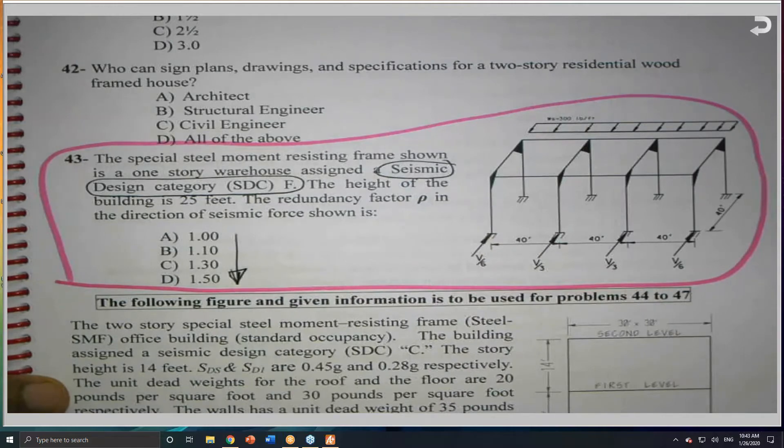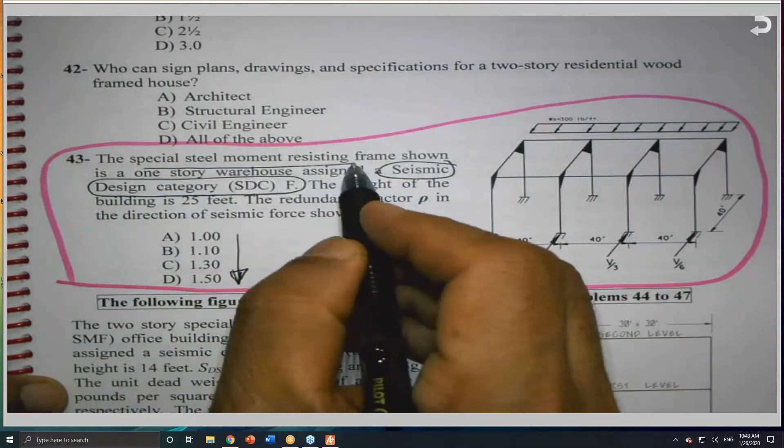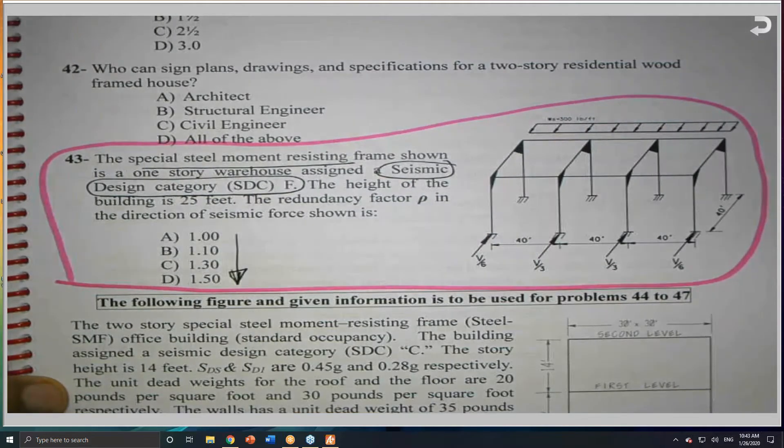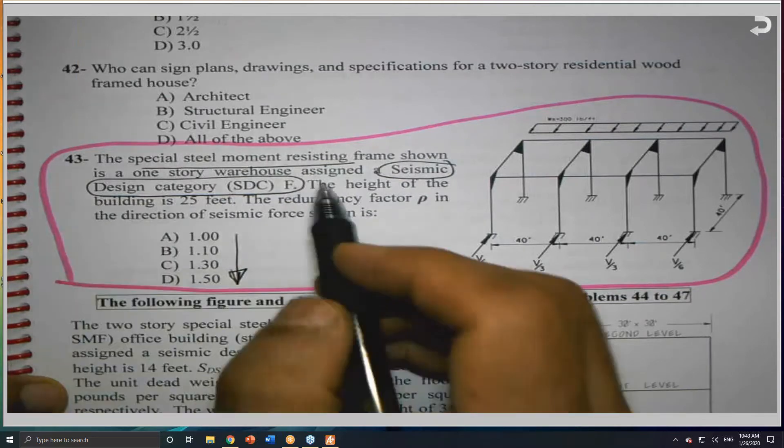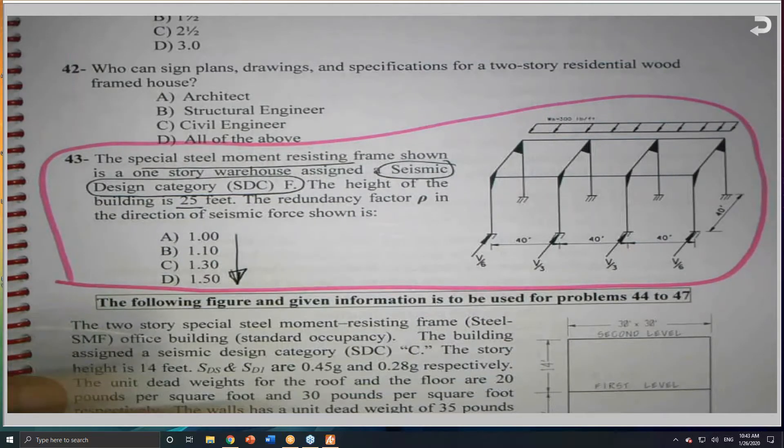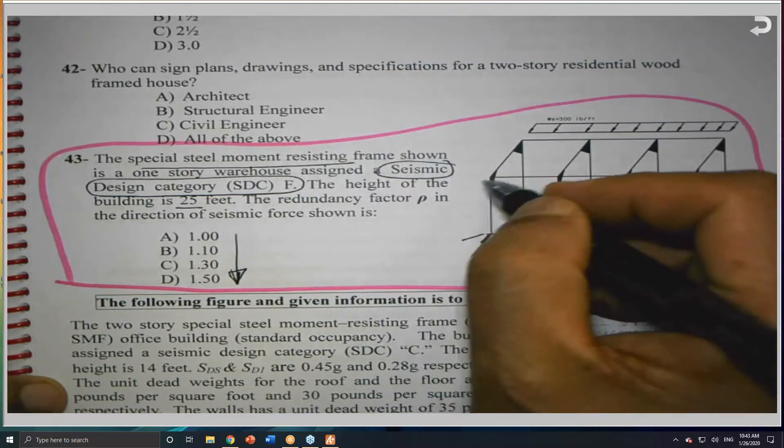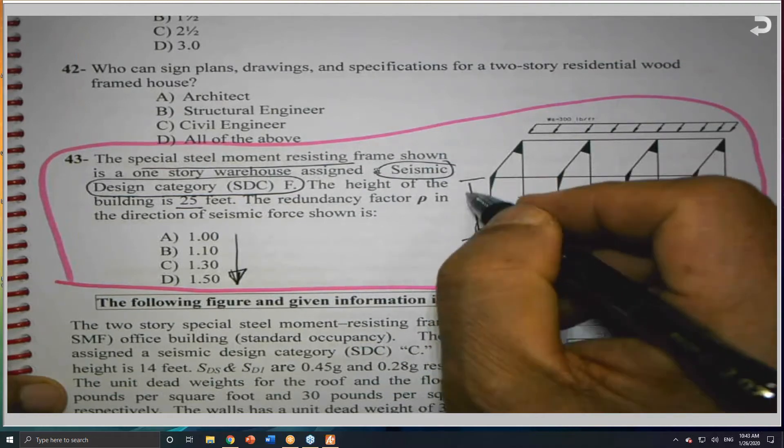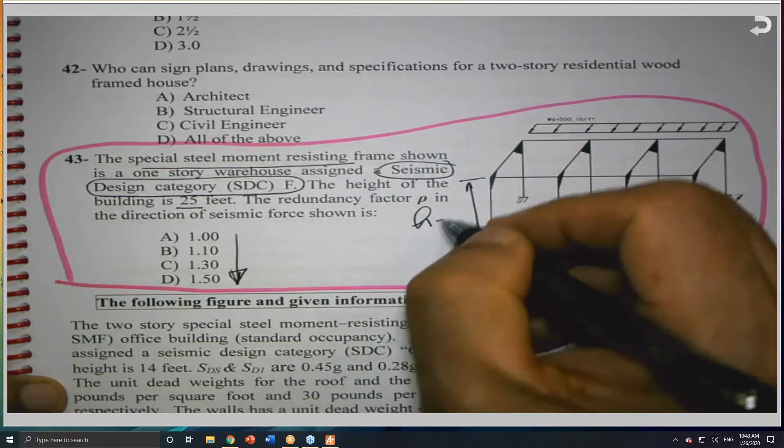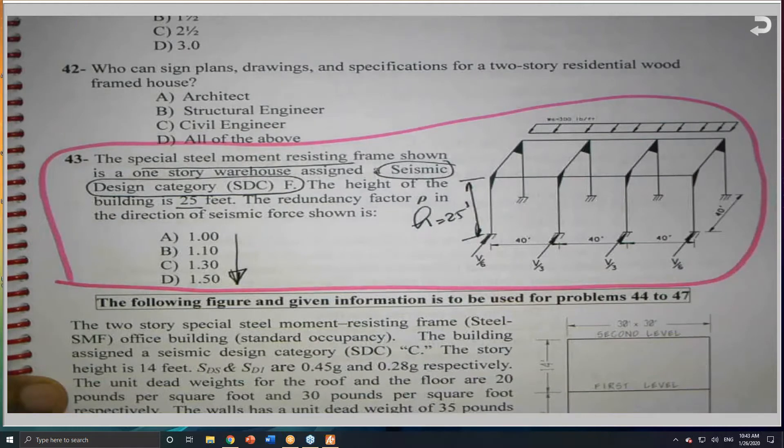Number two, he mentioned this is moment-resisting frame, or special steel moment-resisting frame. That means that I am able to count the number of bays. The height is given to be 25 feet. The height has nothing to do with the problem, because for redundancy, we look to the number of bays.